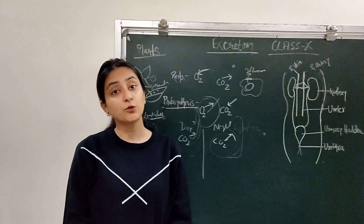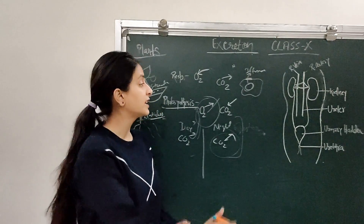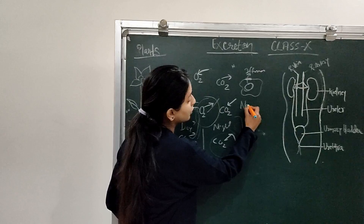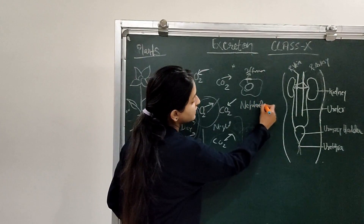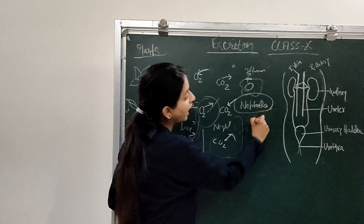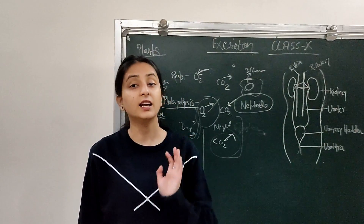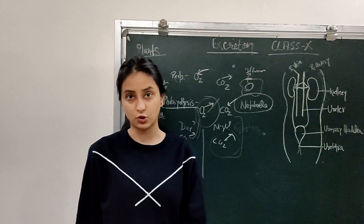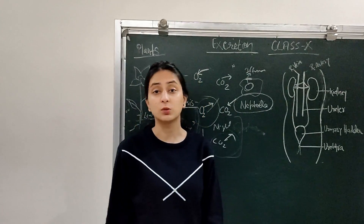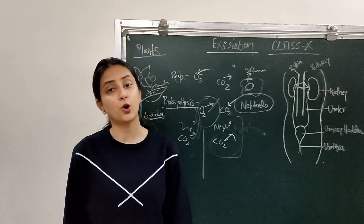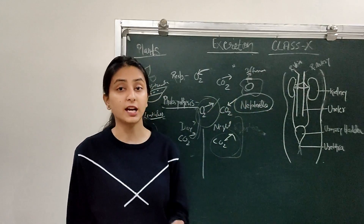In the case of earthworms, excretion is carried out by structures called nephridia. Nephridia are the excretory units in earthworms. You don't need to know this in great detail. The most important topic is the excretory system in human beings, where short answer or long answer questions can be asked — very well with a diagram.